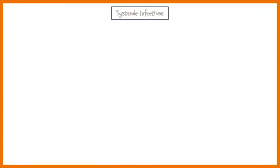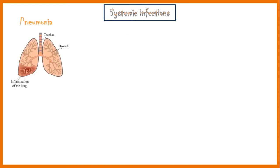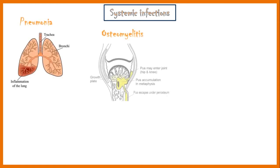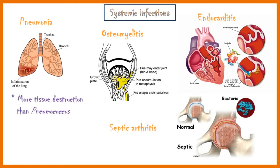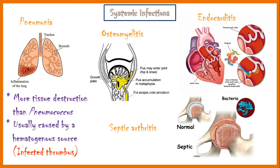Most common systemic infections of Staphylococcus aureus include pneumonia, osteomyelitis, endocarditis, and septic arthritis. In staphylococcal pneumonia, there is more tissue destruction than pneumococcal pneumonia, and it is usually caused by a hematogenous source, like an infected thrombus.